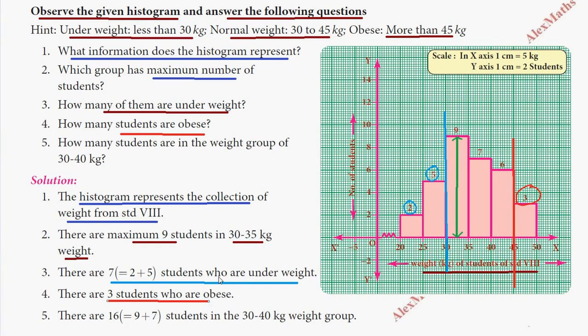Question five: How many students are in the weight group of 30 to 40 kg? Looking at the histogram, we have 9 students in 30 to 35 and 7 students in 35 to 40. Adding these together: 9 plus 7 equals 16 students in the 30 to 40 kg weight group.